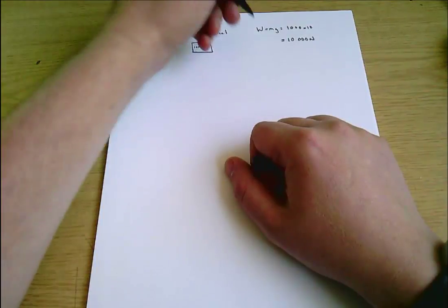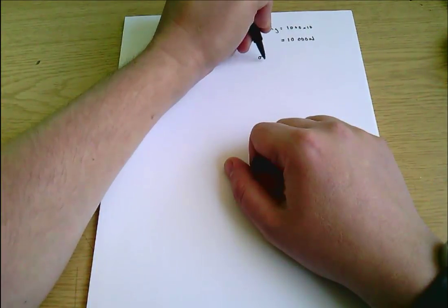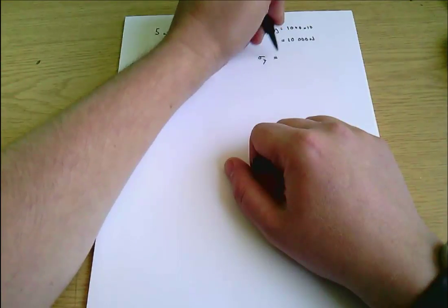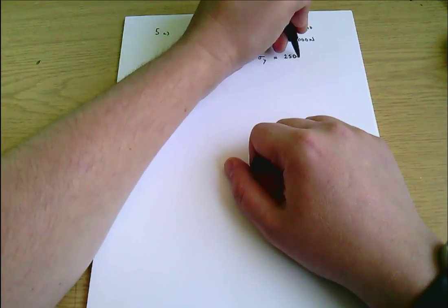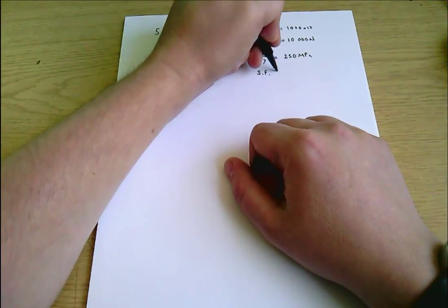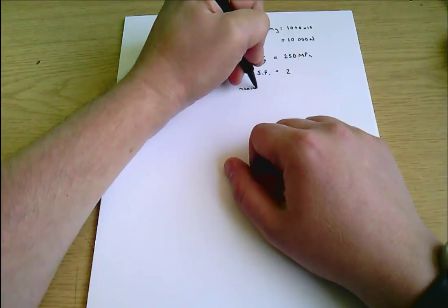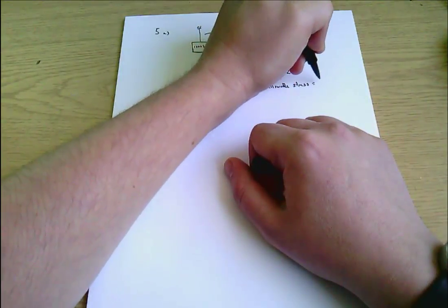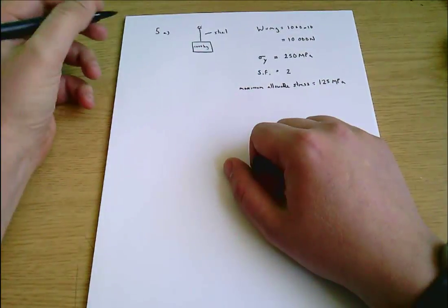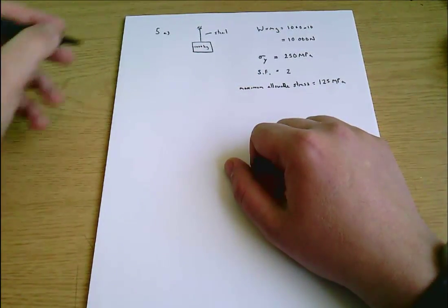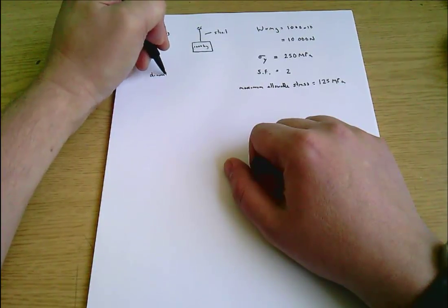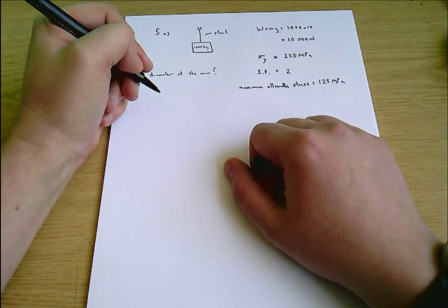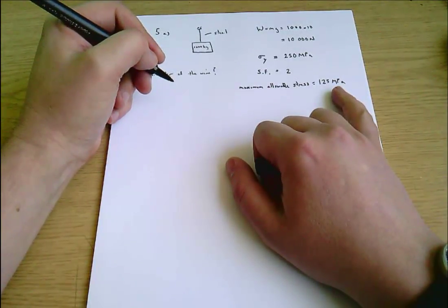We are also told the tensile yield strength of steel is 250 megapascals. We call that sigma y - sigma is a stress or a strength and y for yield. You're told that the safety factor equals 2 so the maximum allowable stress equals 125 megapascals. There's quite a lot of information in the question and what we want to know is the diameter of the wire.